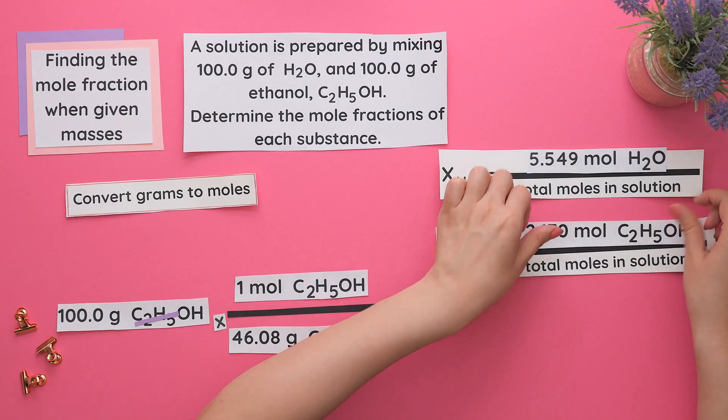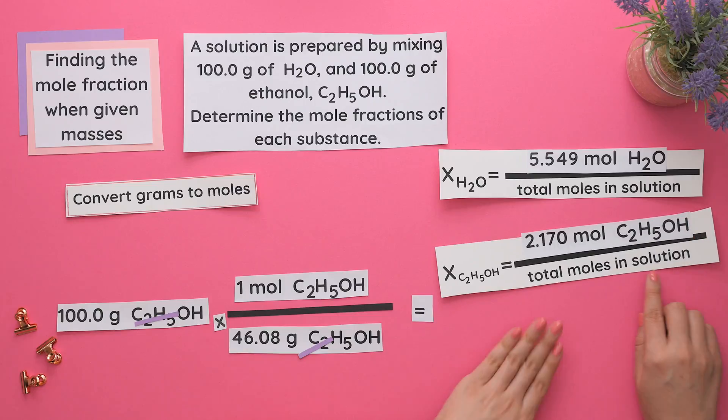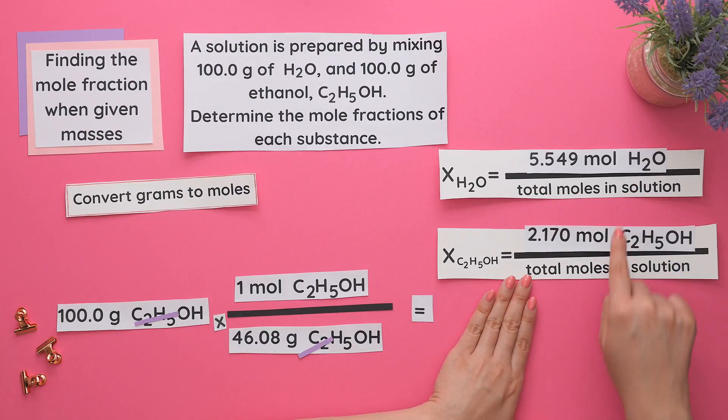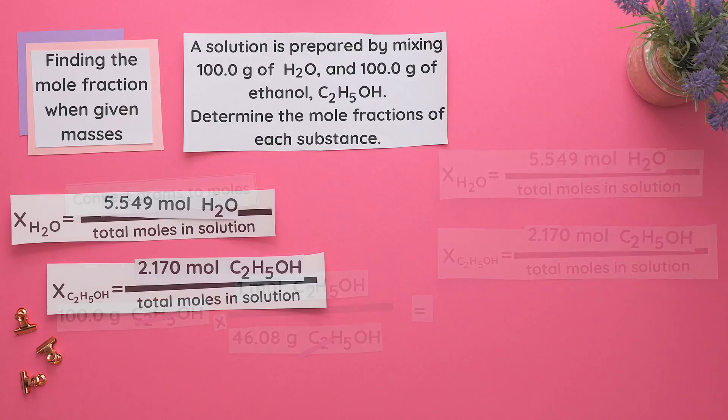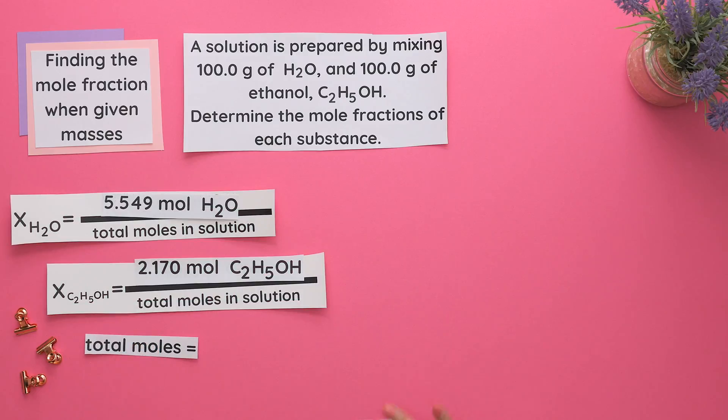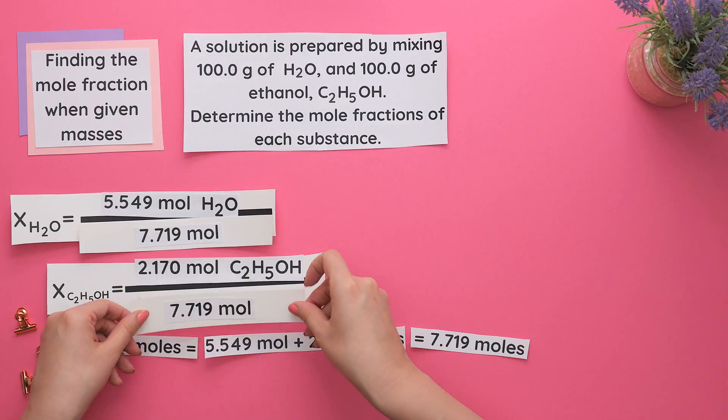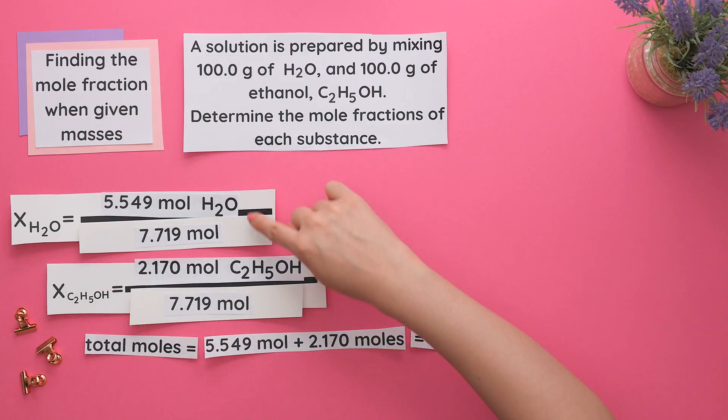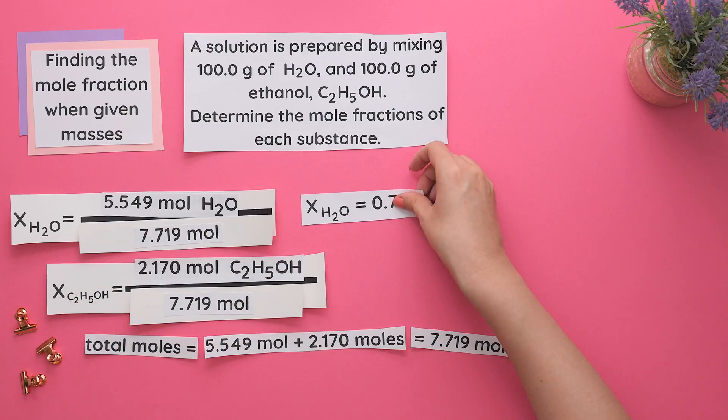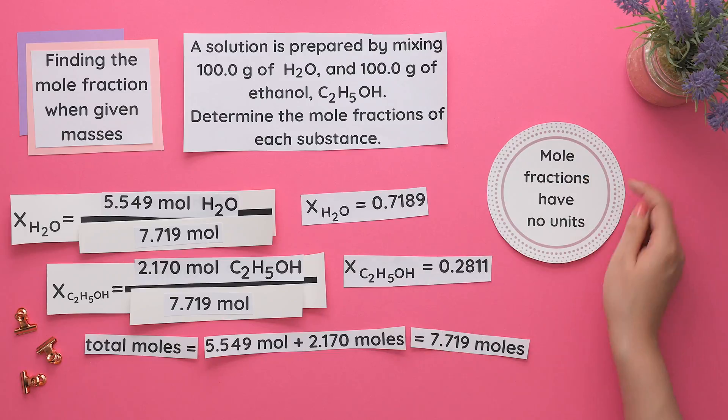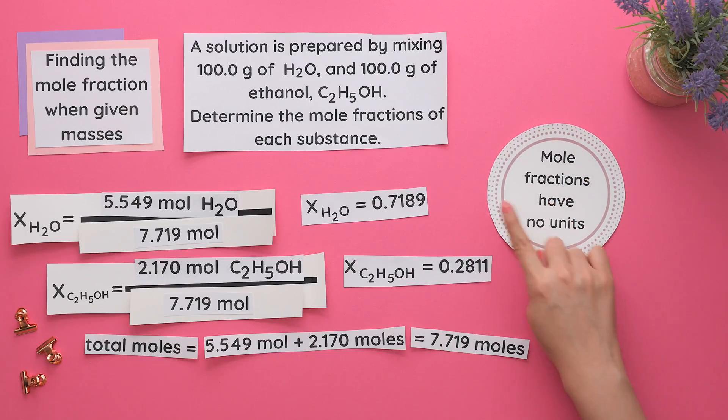So far we found the moles of each substance. Now we need the total moles of the solution. To find the total moles, we will add up all the moles of the substances in the solution. Adding the moles of water and moles of ethanol gives us this. We'll place our total moles in our formula, divide each, and we just found each mole fraction. Note: mole fractions do not have any units since the moles cancel out.